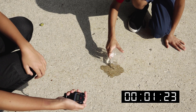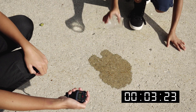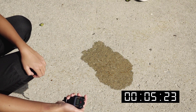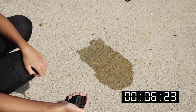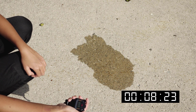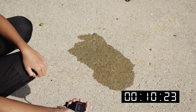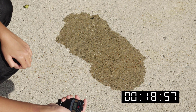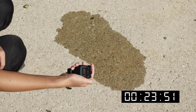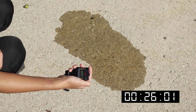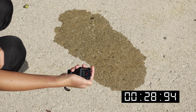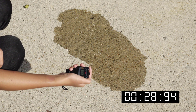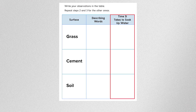Follow the same steps as you did with the grass. Have your teacher refill the cup with water. Make sure your timer is set at zero. Start the timer as soon as the water is poured and stop it once the water stops spreading out. What happened when you poured the water on the cement? Did the cement soak up the water? Record the time in the data table. When you're ready, select Continue.